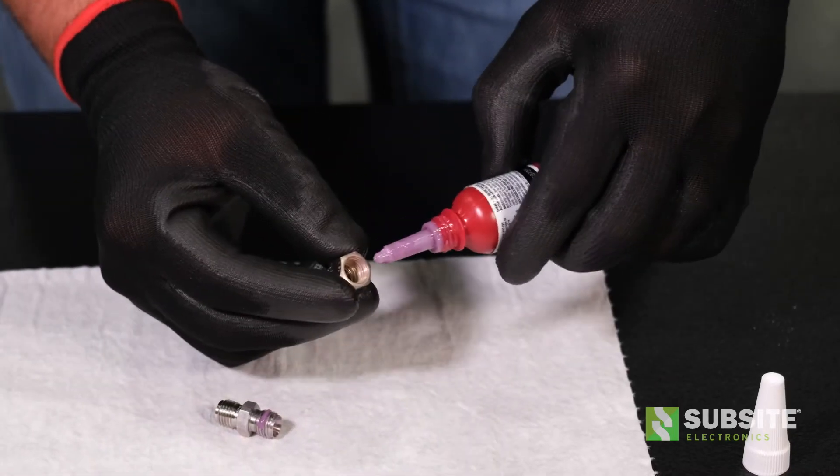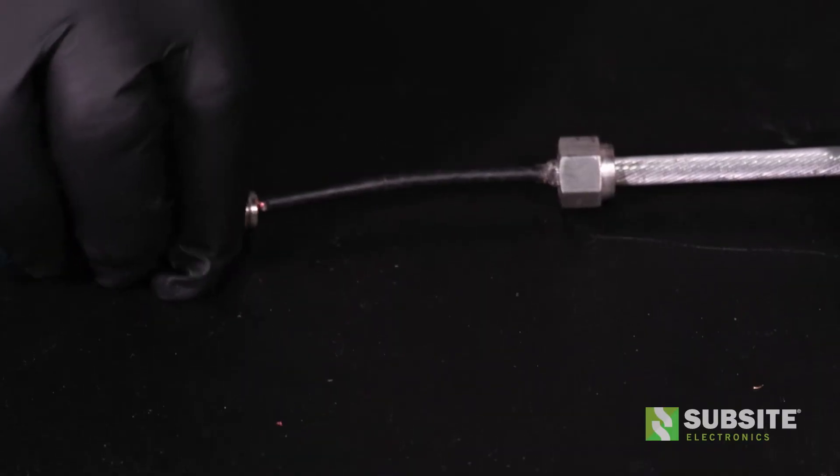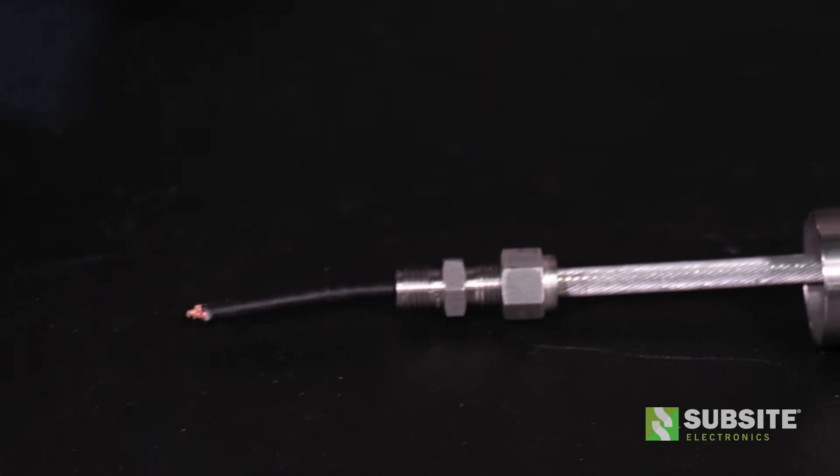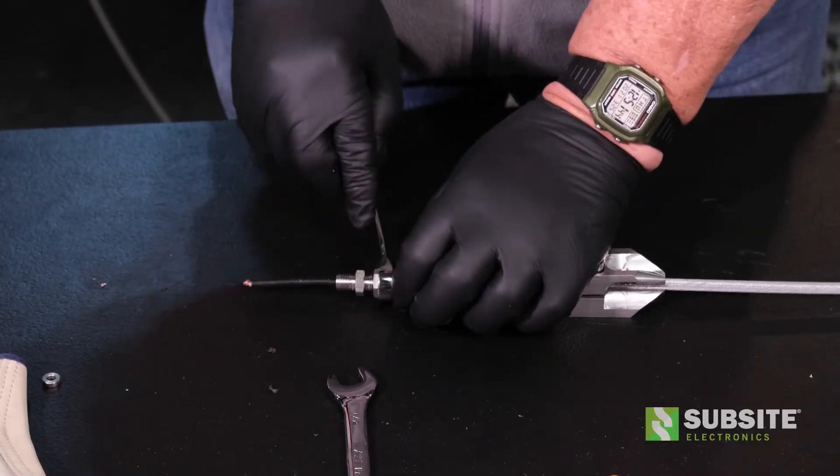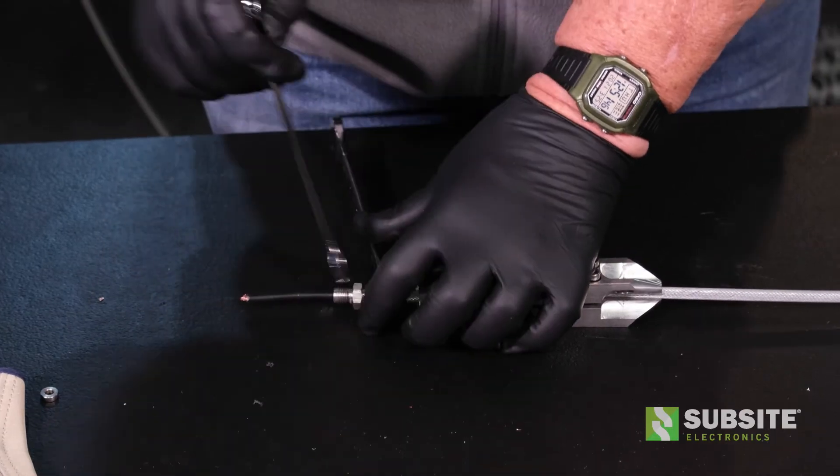Apply purple Loctite to the threads of the ferrule nut. Then insert the cable through the ferrule body and tighten. Use the 9/16 inch wrench to hold the ferrule nut while using the 1/2 inch wrench to tighten the ferrule body.